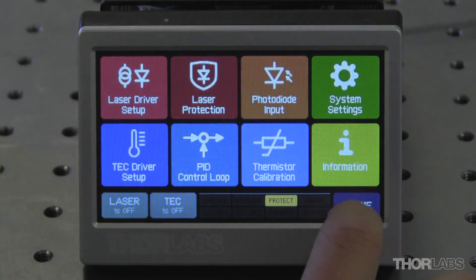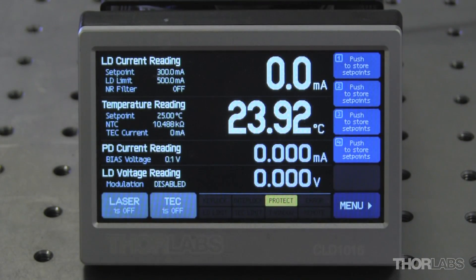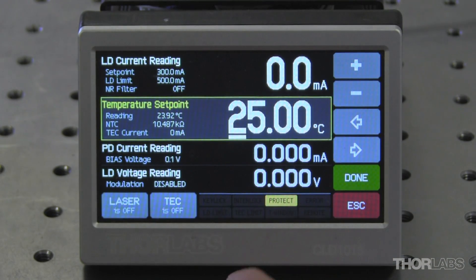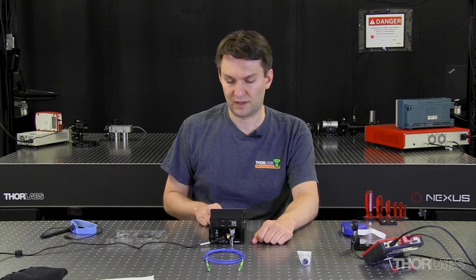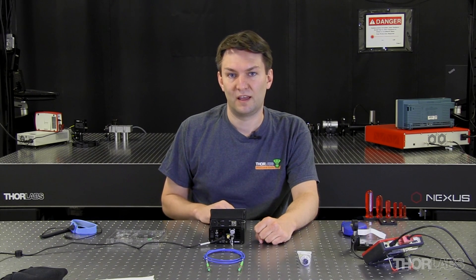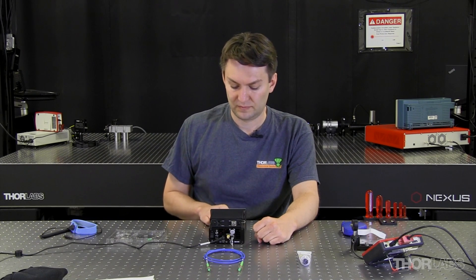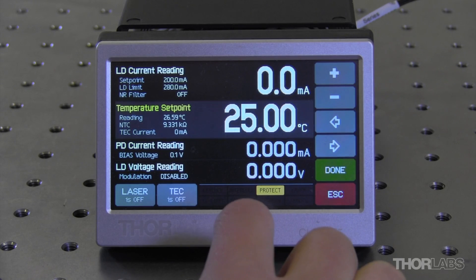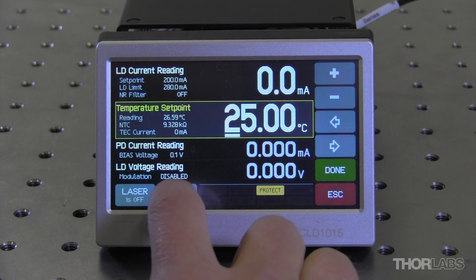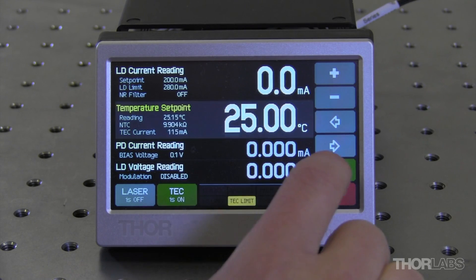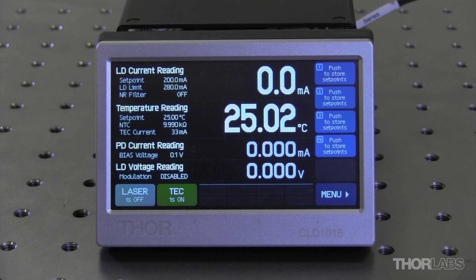Once that's set, I will go back to the main menu. And I'm going to set the temperature to 25°C. I like to use 25°C because it's generally above the room temperature that I'm using my laser. And it'll prevent the driver from trying to fight with any room temperature fluctuations. So at 25°C, I'll turn my TEC on and allow the device to settle at the temperature that I want.